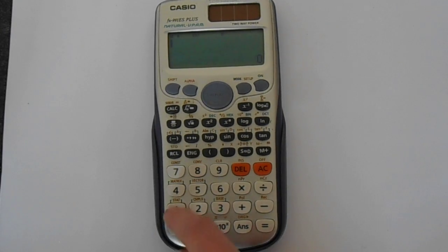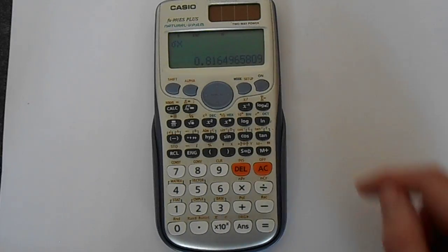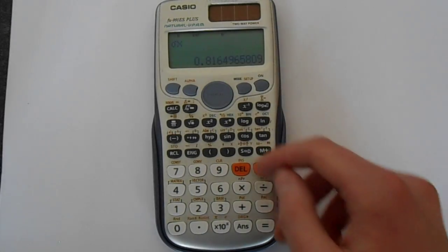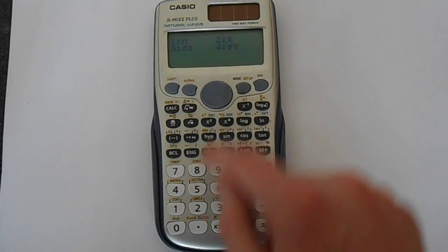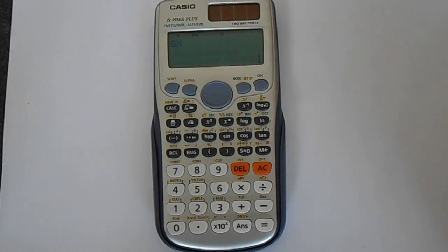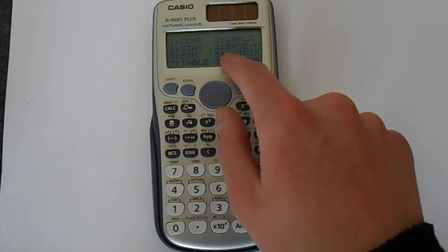So we're going to shift stat 4 and then we can say 3 and that gives us a standard deviation. That's one type of standard deviation. The other type is 4. That's 1 as you would expect. That's the n minus 1 standard deviation.